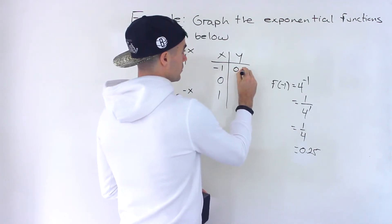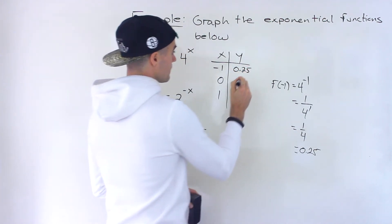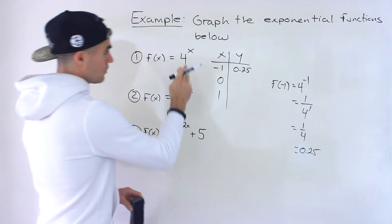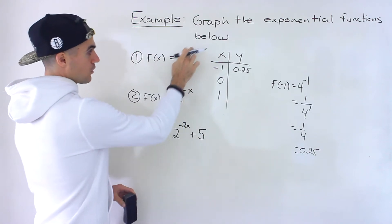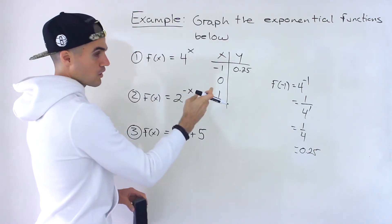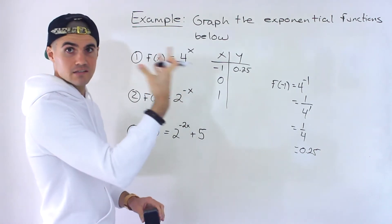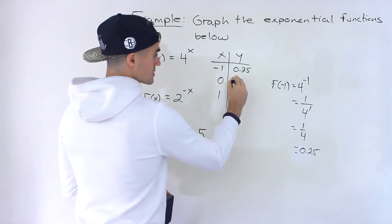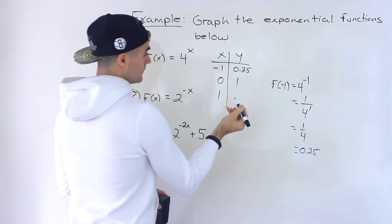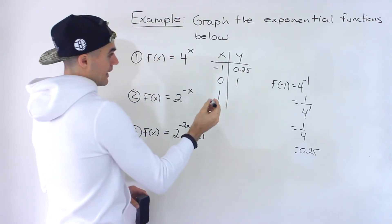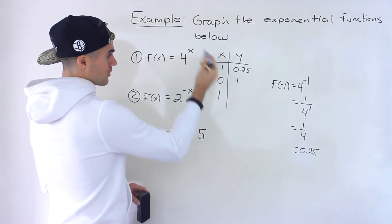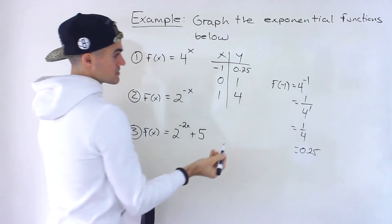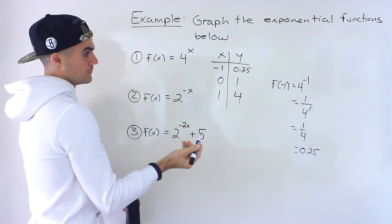So the value at x = -1 is 0.25. If we plug in zero for x, 4 to the power of zero — anything to the power of zero is just one. And then if we plug in one for x, 4 to the power of one is just going to give us four.